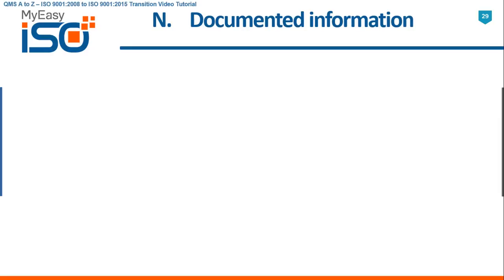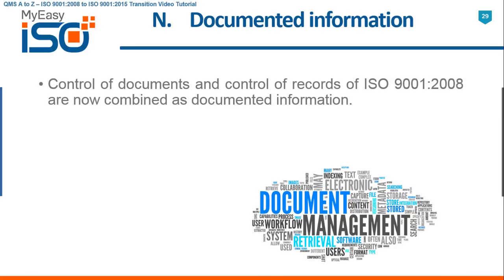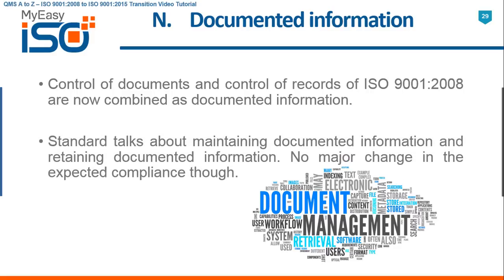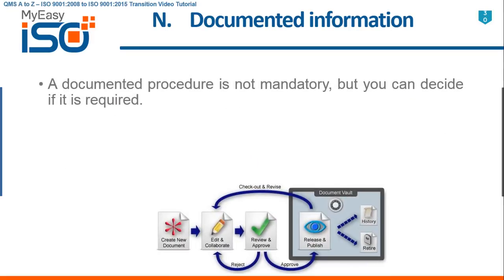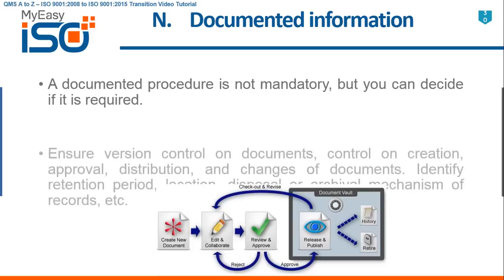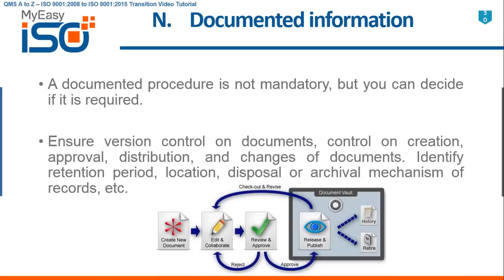N. Documented Information. Control of documents and control of records from ISO 9001 2008 are now combined as documented information. The standard talks about maintaining documented information and retaining documented information — no major change in the expected compliance. A documented procedure is not mandatory, but you can decide if it is required. Ensure version control on documents, control on creation, approval, distribution, and changes of documents. Identify retention period, location, disposal, or archival mechanism of records.